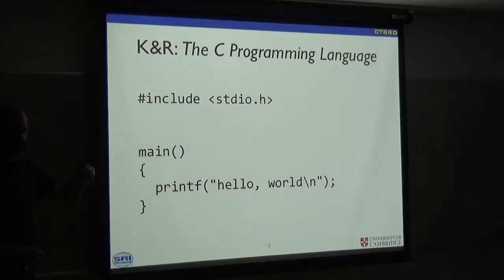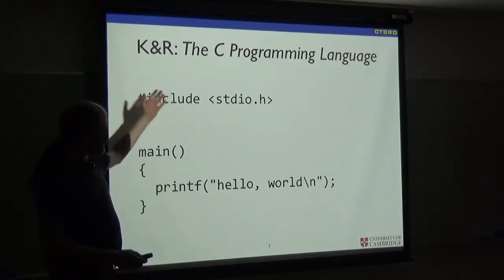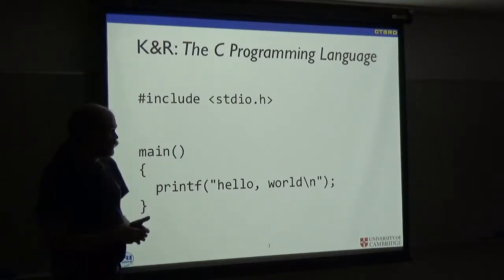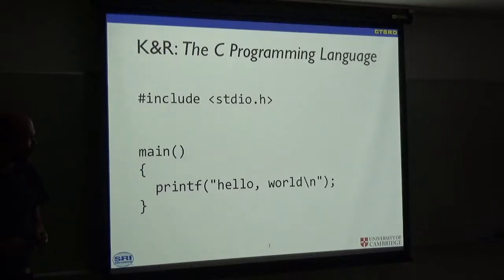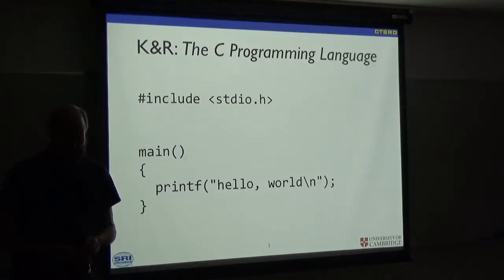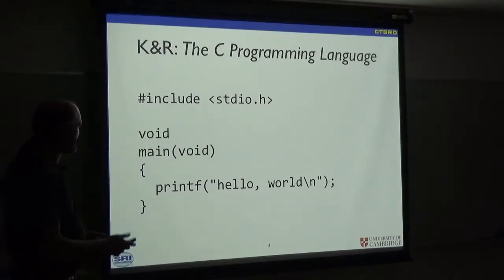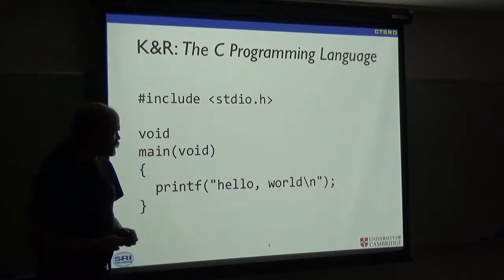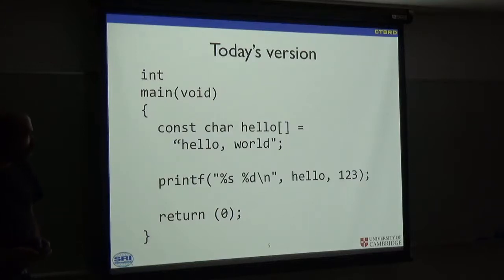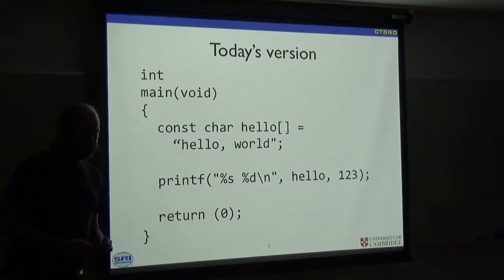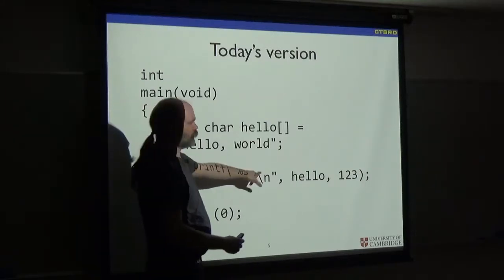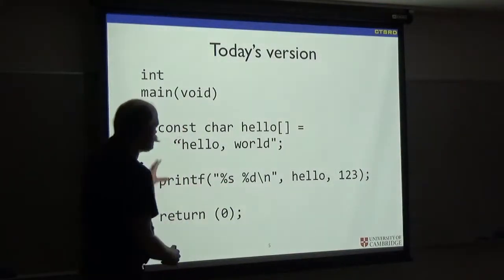Here we are. This is the first example in Kernighan and Ritchie's C programming language. It's on the first page. It's a trivial thing. We're going to dig into what else is involved with actually running this program. So first off, I'll point out that the example doesn't see in a modern sense, so we'll have some declarations here.